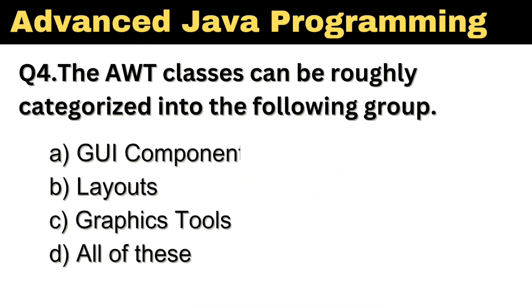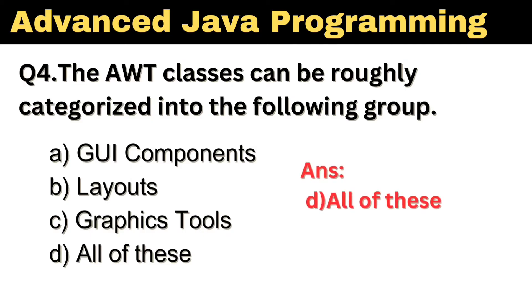Question number 4: The AWT classes can be roughly categorized into the following group. The right answer is Option D: All of these.